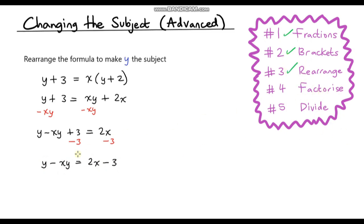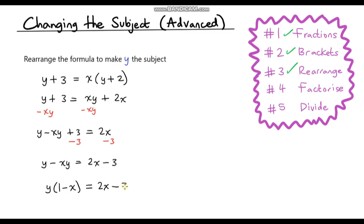We do need to factorise because we've got two instances of y and we just want one. So we can factor out a y. y divided by y is just 1, and then xy divided by y is just x. So we're left with y times (1 minus x). You can always check this by expanding your brackets. On the right hand side we've got 2x minus 3.